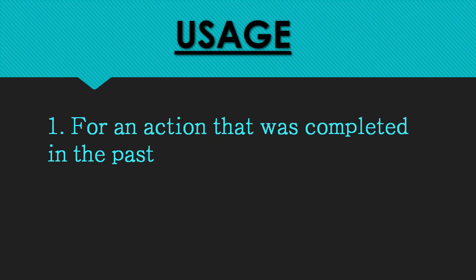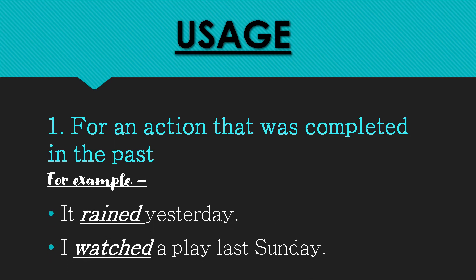How is simple past tense used? We will see in this slide. Simple past tense is used for an action that was completed in the past. Let's make it clear with the help of examples: 'It rained yesterday.' 'I watched a play last Sunday.' That means the action was completed in the past.